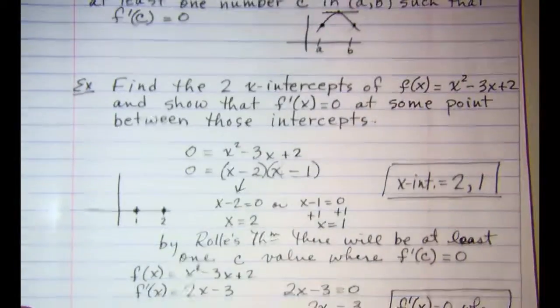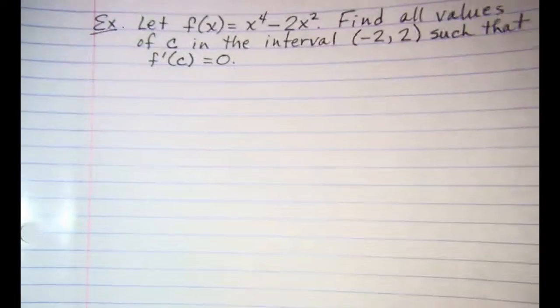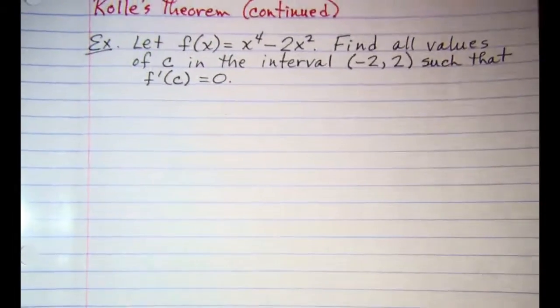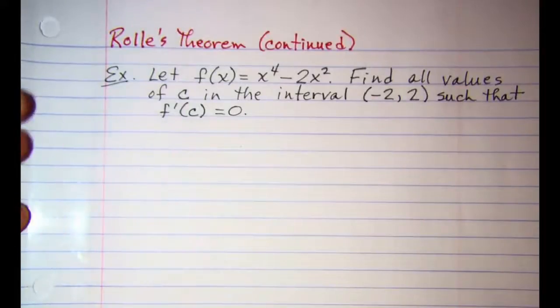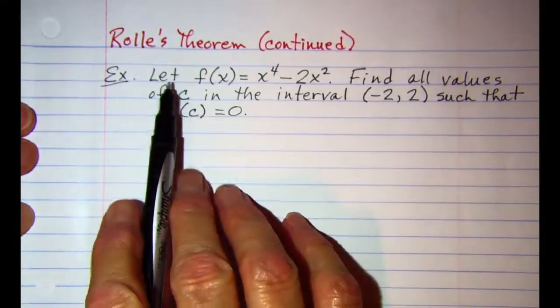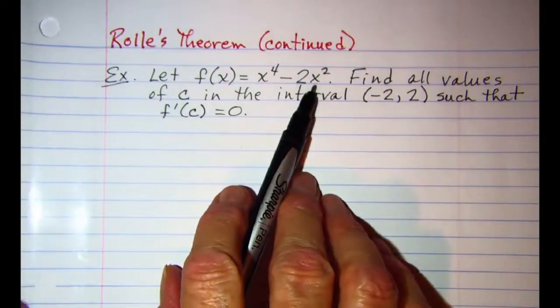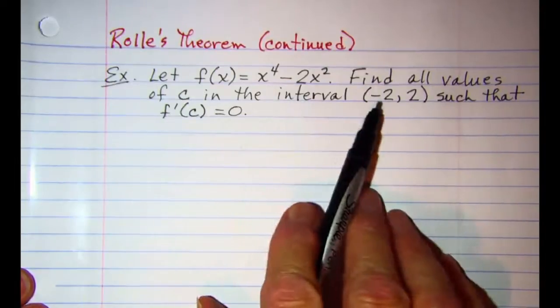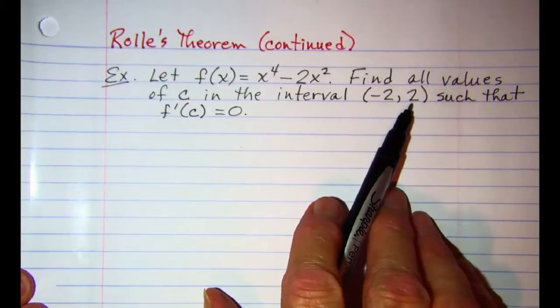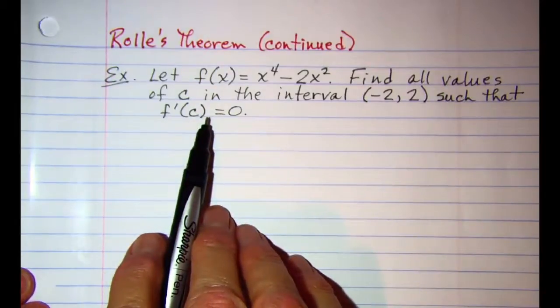This will be another problem involving Rolle's theorem. In this next example we're letting f of x equal x to the fourth minus 2x squared and we're asked to find all values of c in the interval from negative two to positive two such that f prime of c is equal to zero.